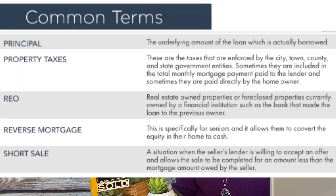Principal: The underlying amount of the loan which is actually borrowed. Property Taxes: These are taxes enforced by city, town, county, and state government entities. Sometimes they're included in the total monthly mortgage payment paid to the lender, and sometimes they're paid directly by the homeowner. This is usually determined when you first get the loan. You can ask for an escrow impound account so they impound the taxes and pay them, so you don't have to come up with the money when taxes are due.